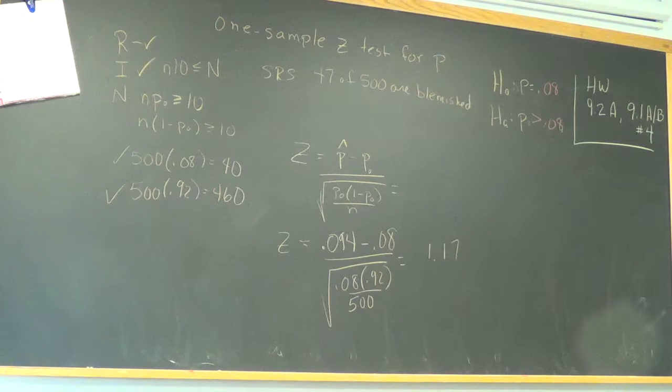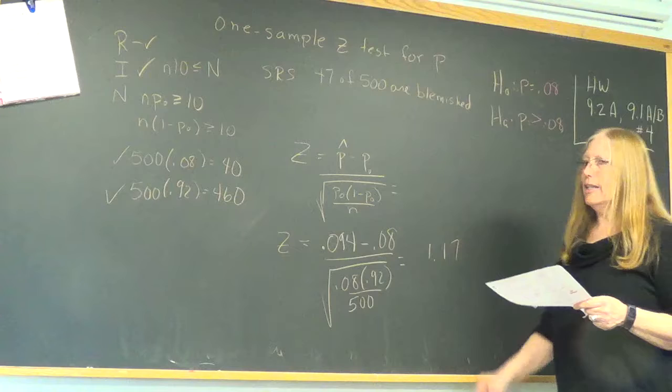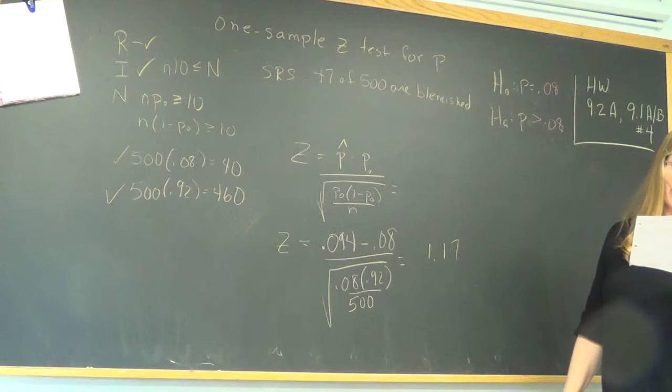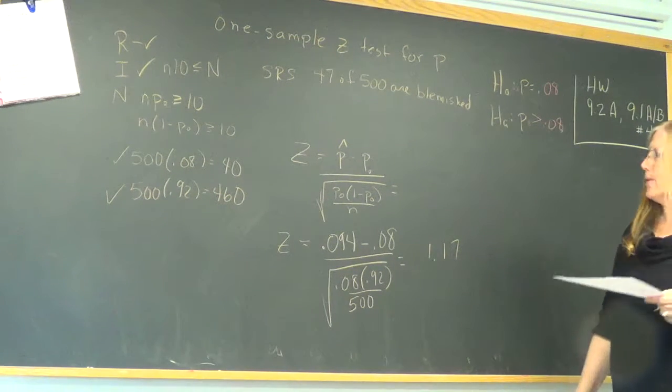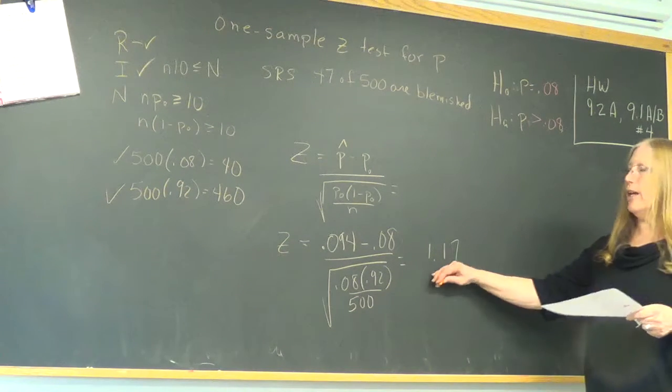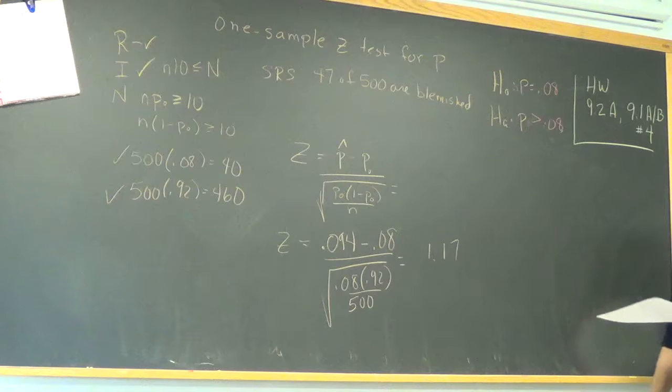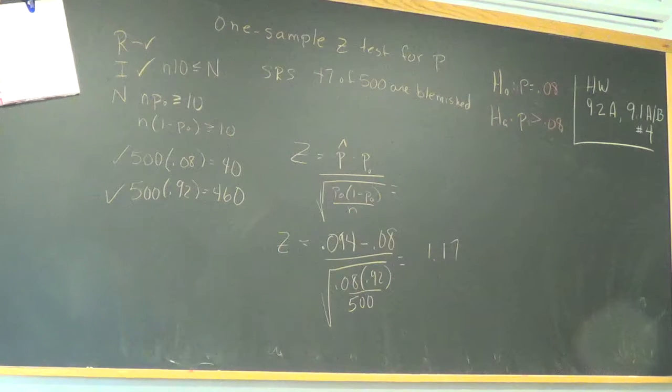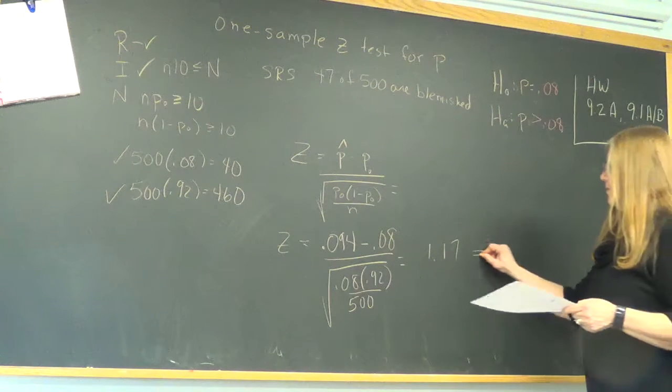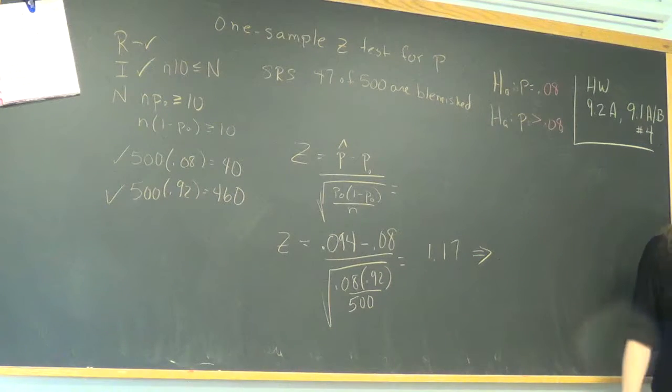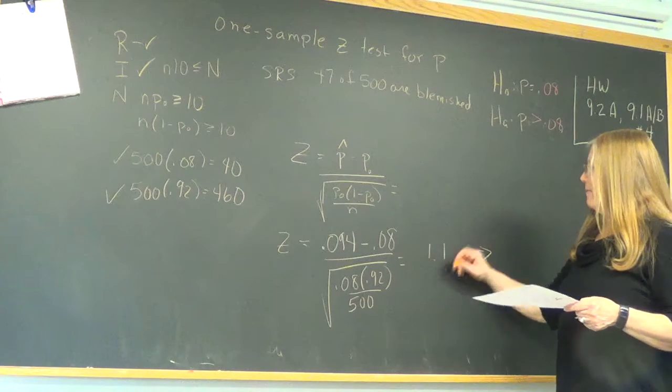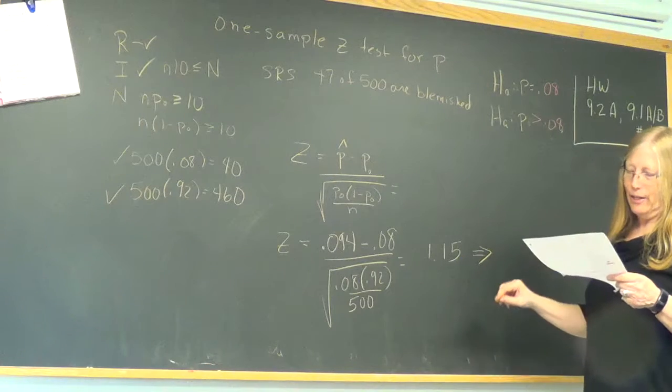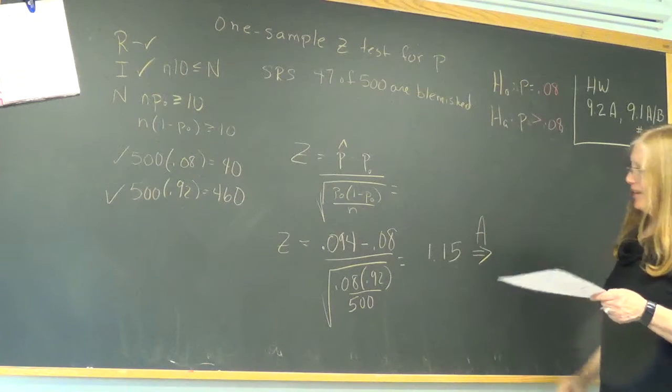So going to chart A, I got something around 0.8749. I'm sure you'll be close. Now this is where the difference is because in the alternative hypothesis, they want to know greater than. So we want to know, the z-score is 1.15. So remember how z-scores work. Here's 1, 2, 3. 1.15 is about right here.